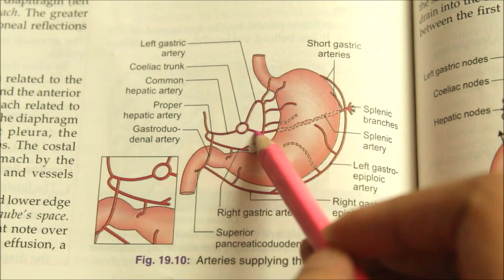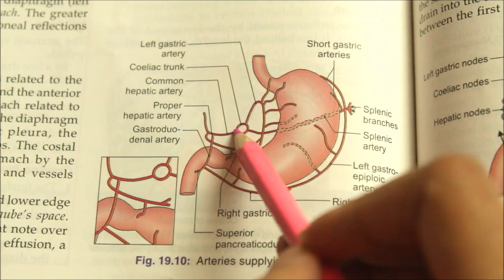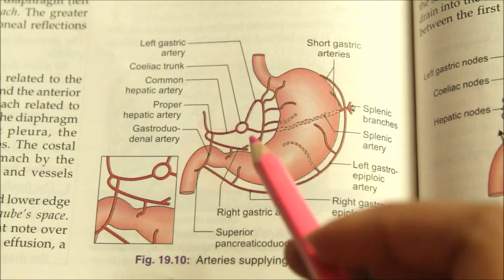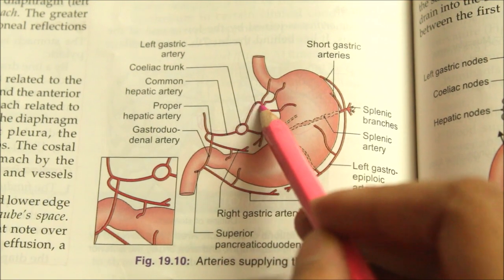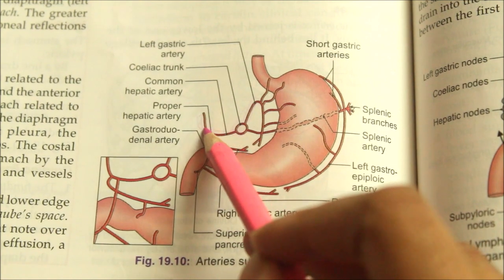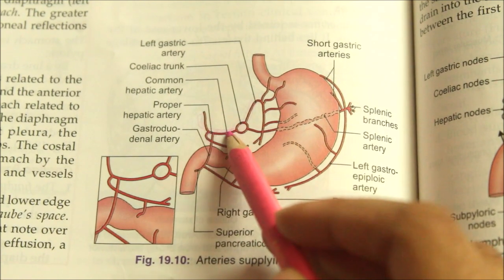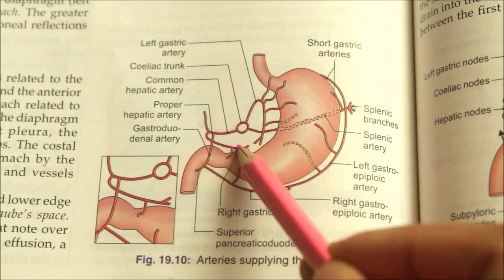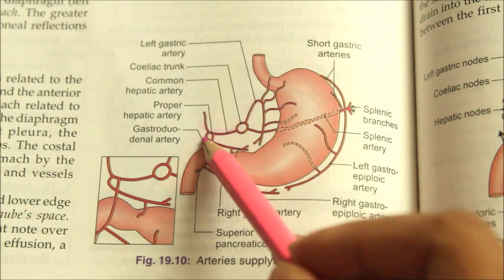The common hepatic artery gives off two branches: the right gastric artery and the gastroduodenal artery.